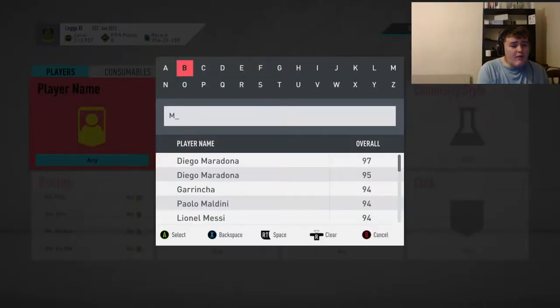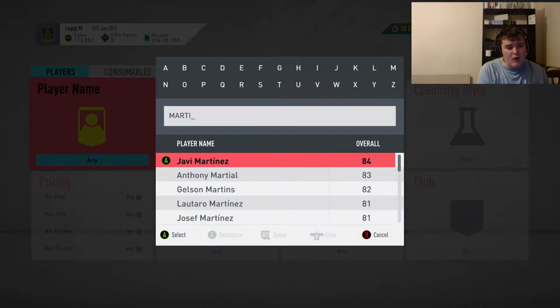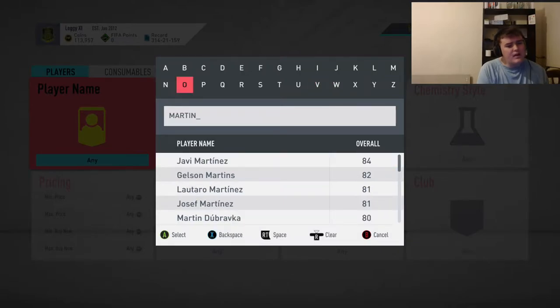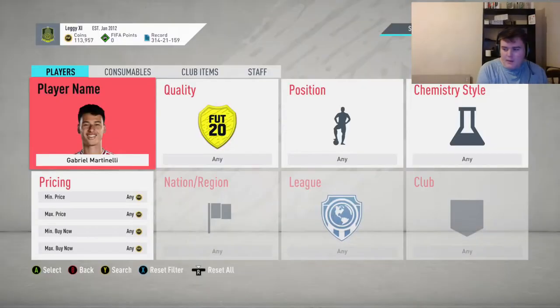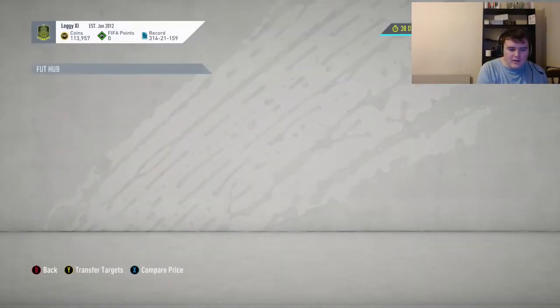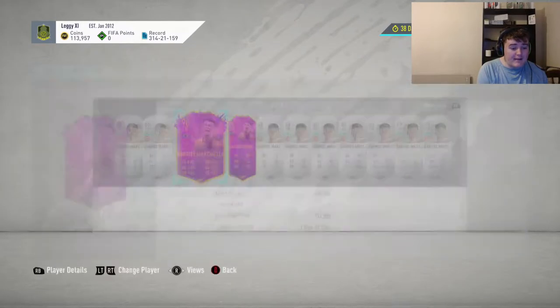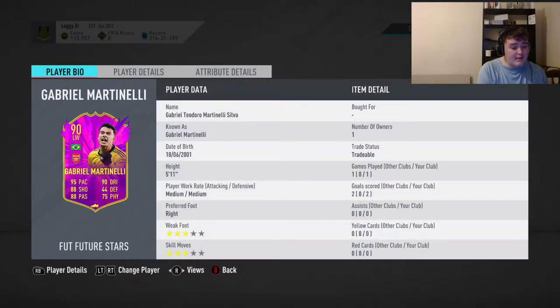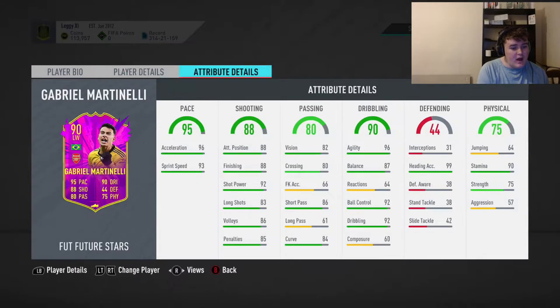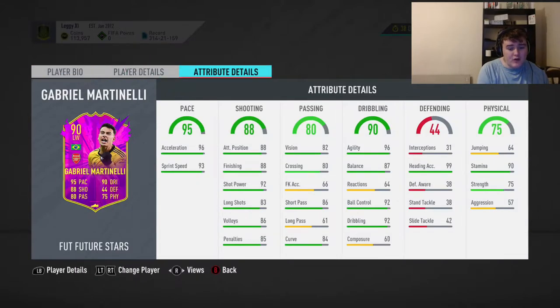But right, so if we go and have a quick look at Martinelli, many people have been asking me, is he a worth investment? No, in my opinion. Because if you look at him, if you look at his card, looks amazing. He's 95 pace, 88 shot, 80 passing, 90 dribbling. But he's got rubbish composure. 60 composure, 64 reactions. It's almost bad.